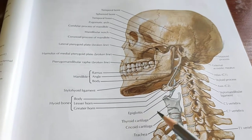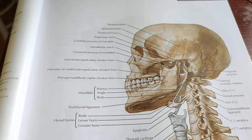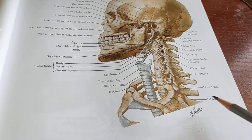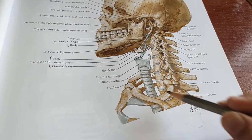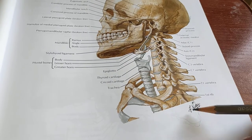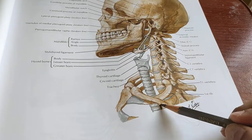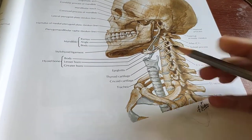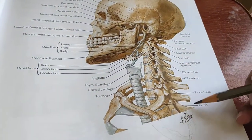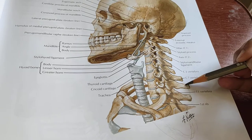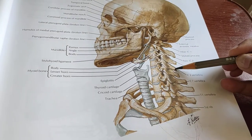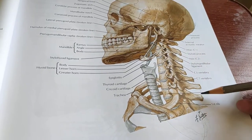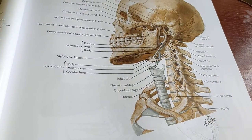The stylomandibular ligament has a function: when you open your mouth with full force, it retracts the mandible and does not allow it to move too far inferiorly. Inferiorly, the investing layer is attached to the spine of the scapula, the acromion process, the clavicle, and the manubrium. Posteriorly, it ends along the ligamentum nuchae, which joins the spinous processes.